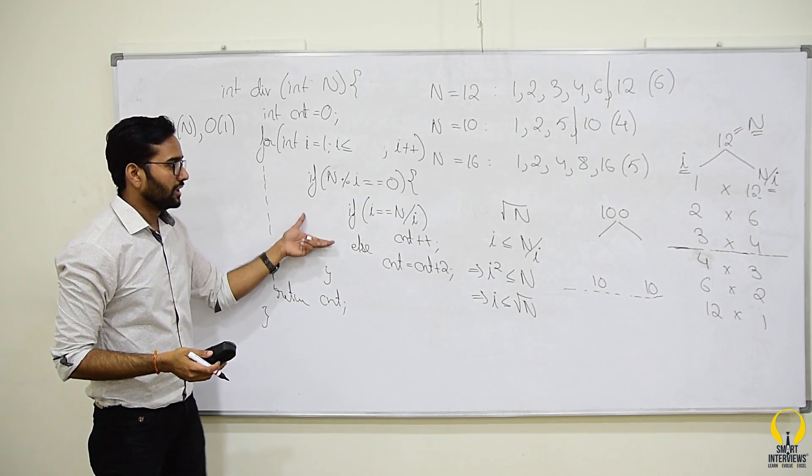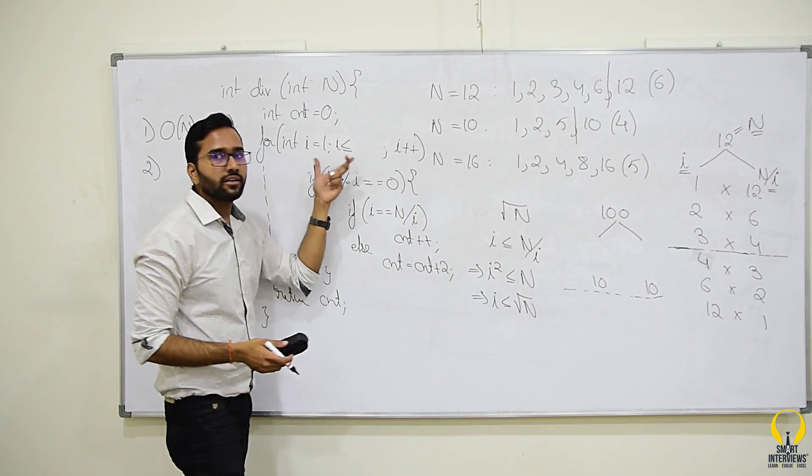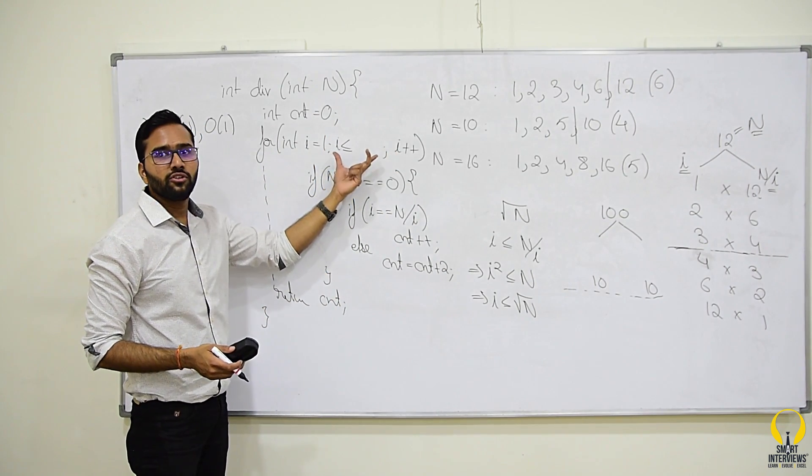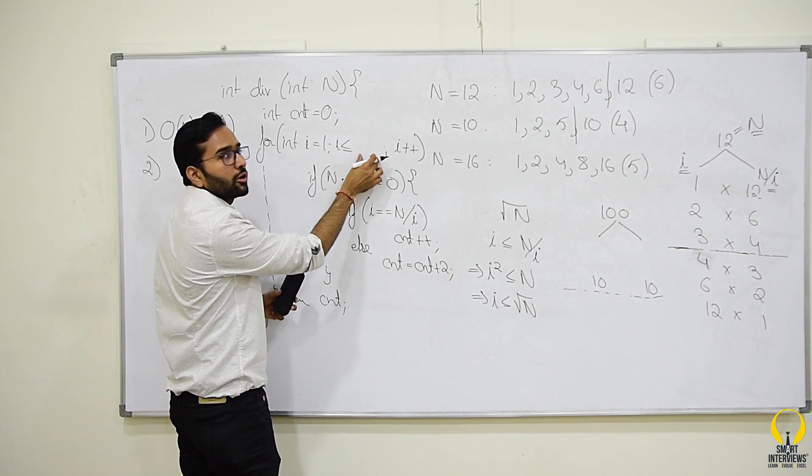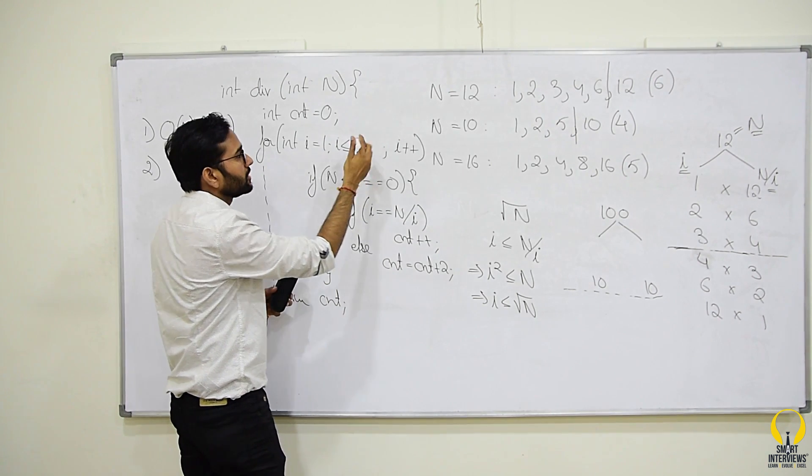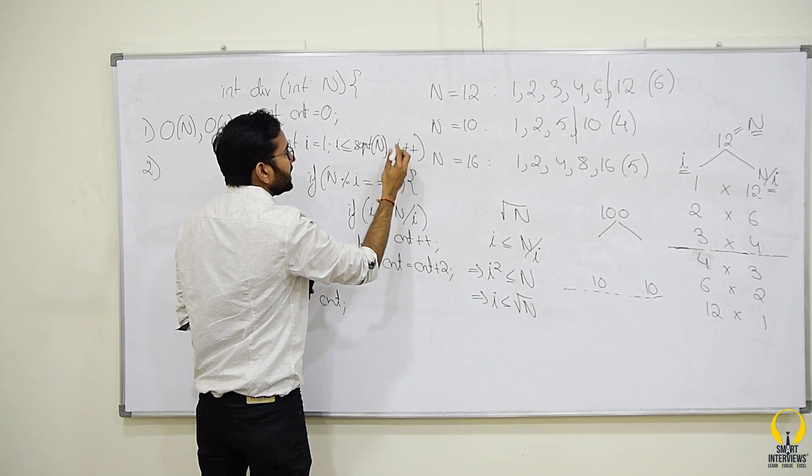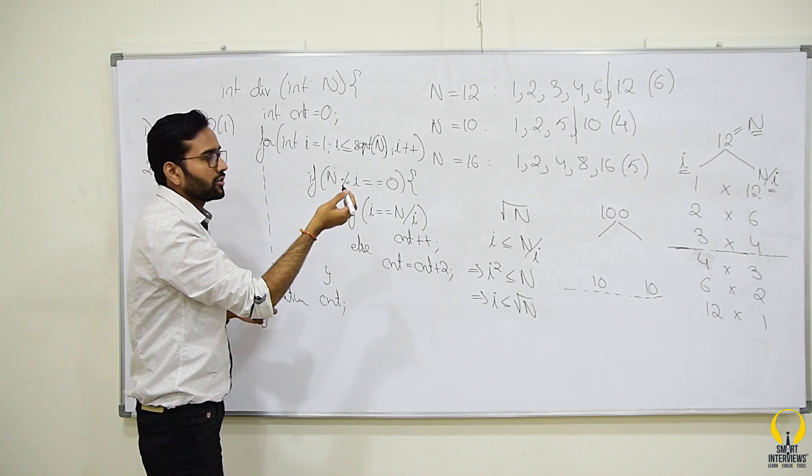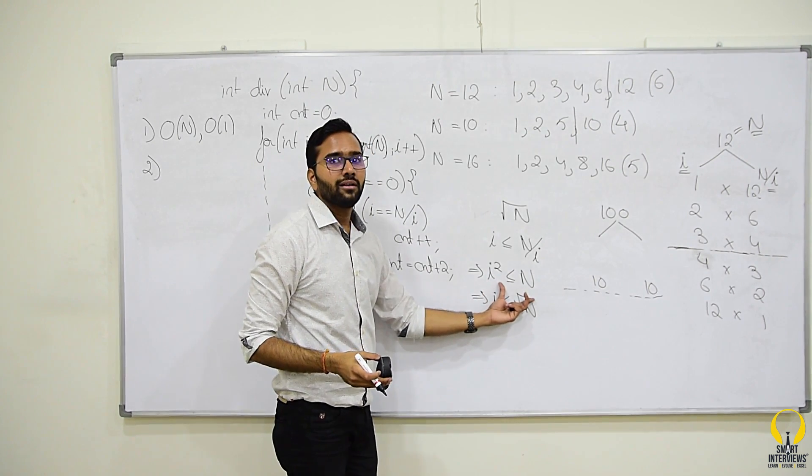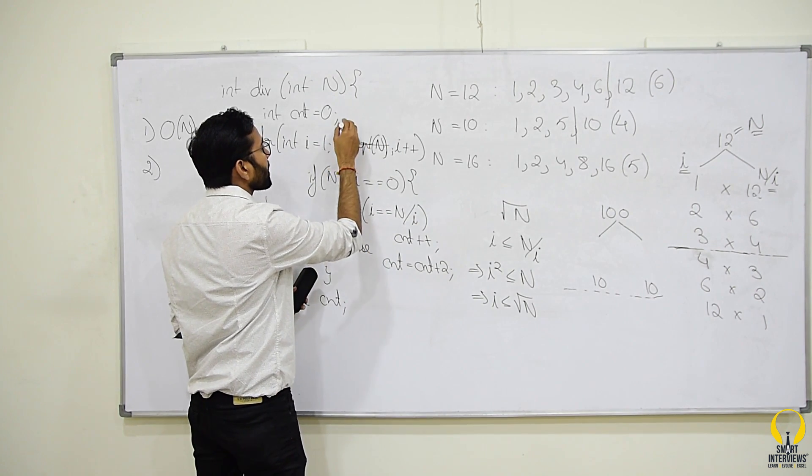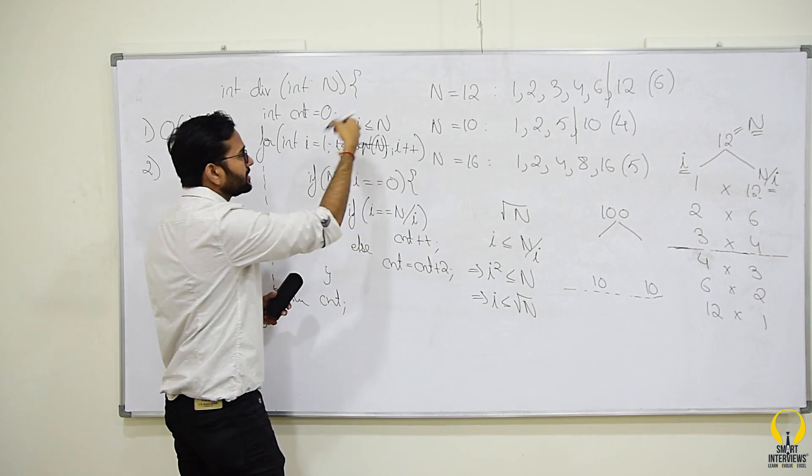Now, if we do this, it will help us find the number of divisors in a better way, in a faster way. How do you make sure you iterate till root n? Will you somehow find the value of root n? So, either you can write square root of n, you can use the inbuilt function or from this, we can observe that i square should be less than equal to n. We can also write it as i into i less than equal to n. It is the same thing.